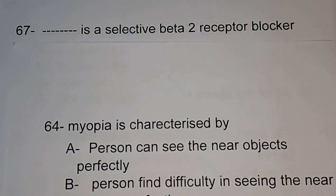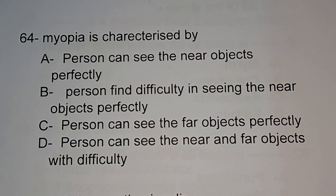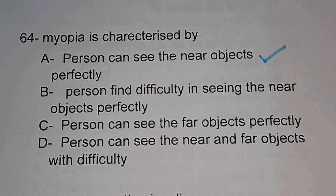Question number 64: myopia is characterized by — option A: a person can see near objects perfectly; option B: person finds difficulty in seeing near objects; option C: person can see far objects perfectly; option D: person cannot see near or far objects. The correct answer is option A — myopia is characterized by the ability to see near objects perfectly but difficulty seeing far objects.